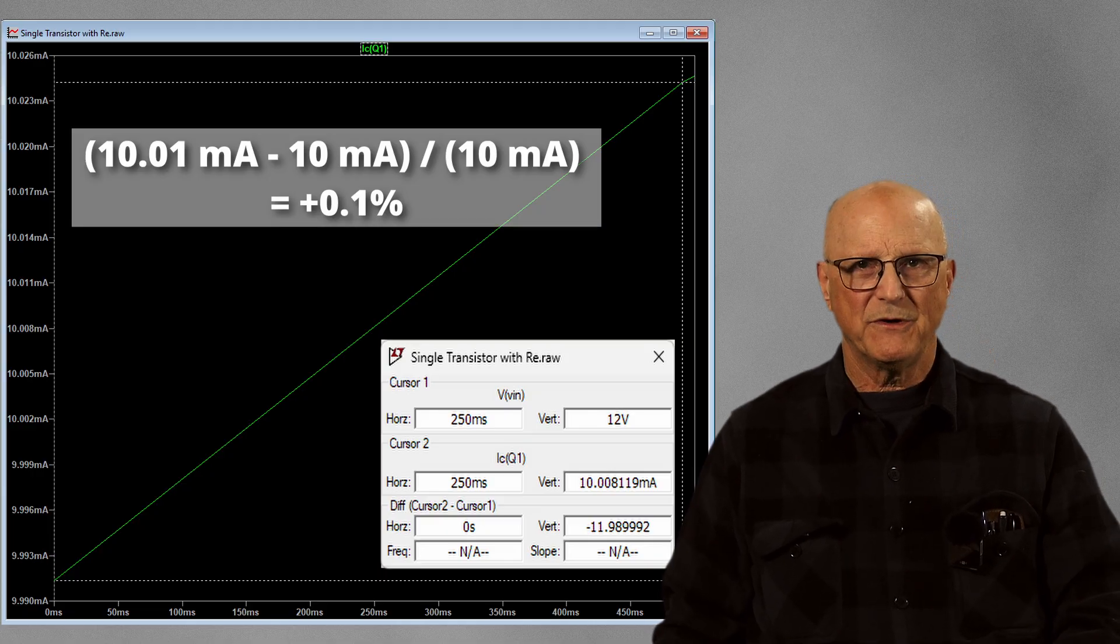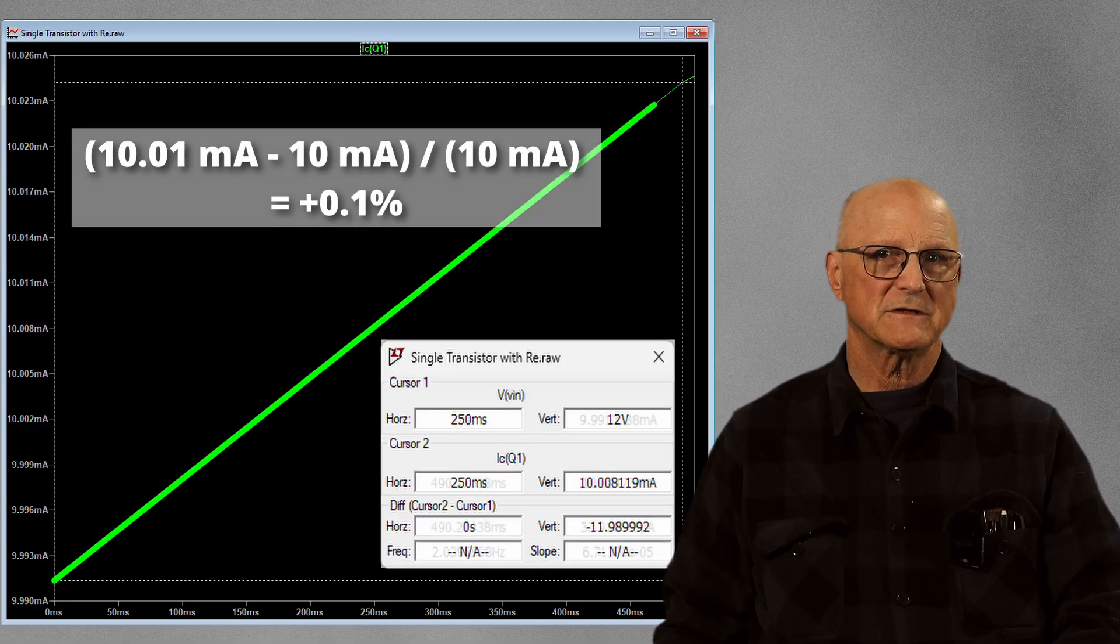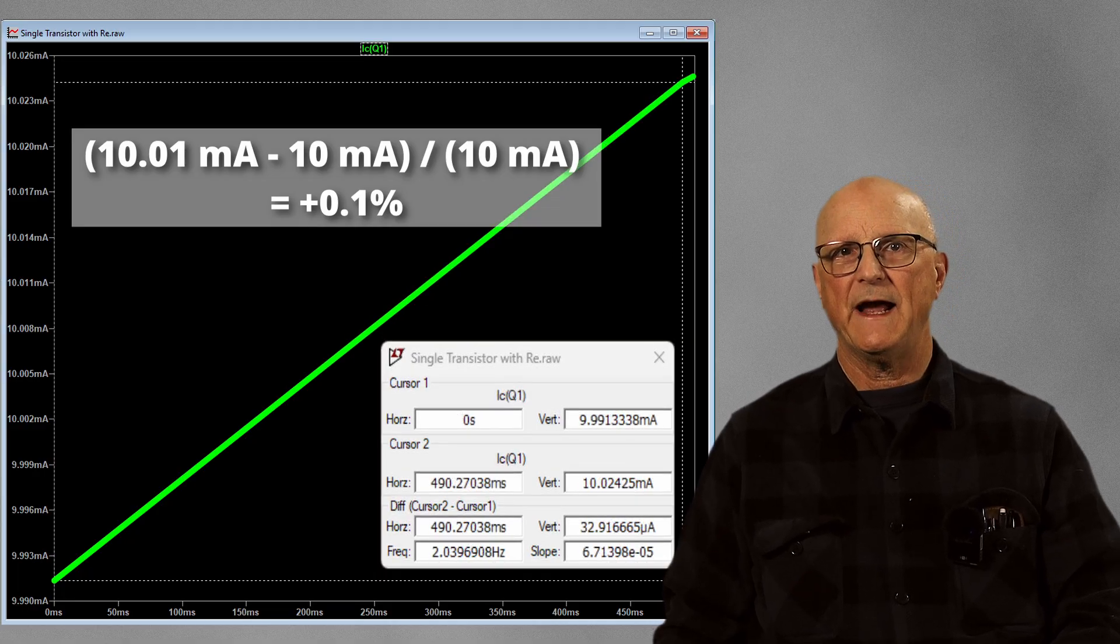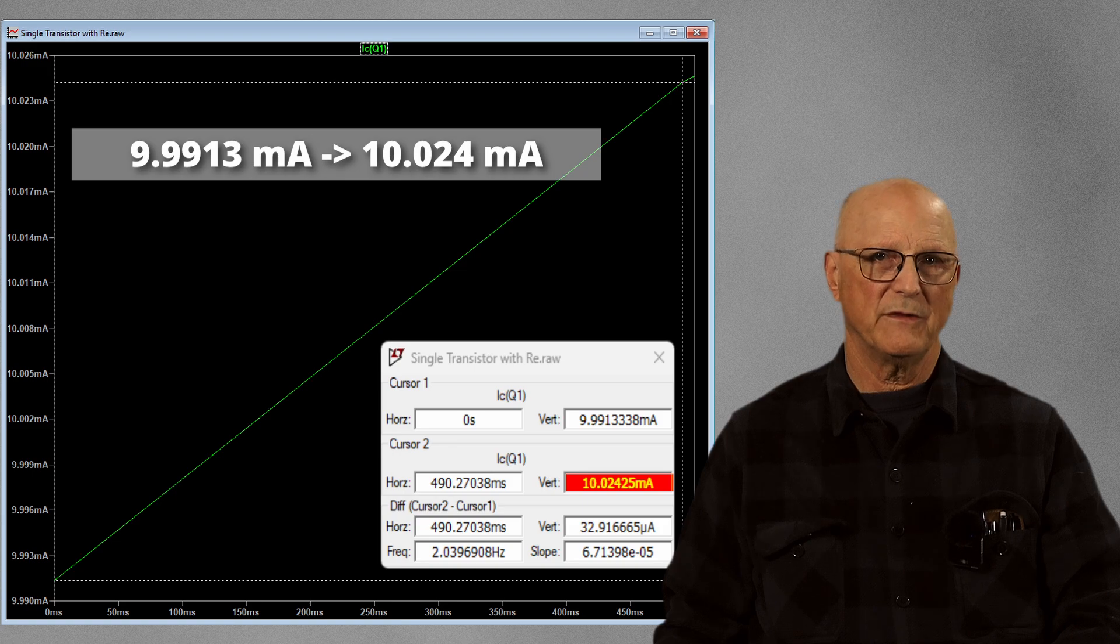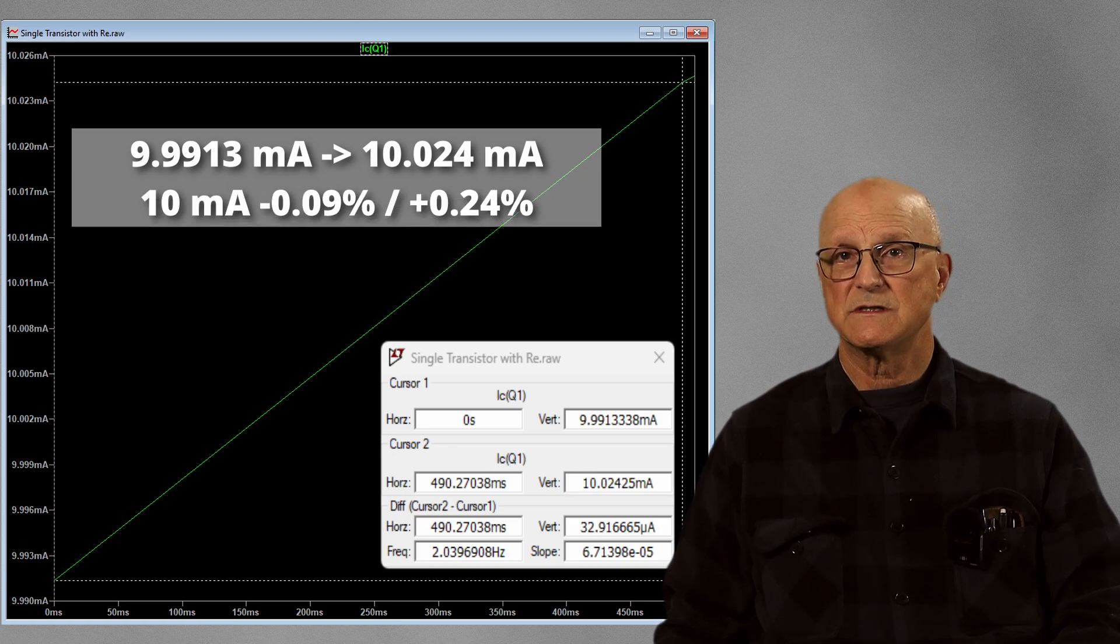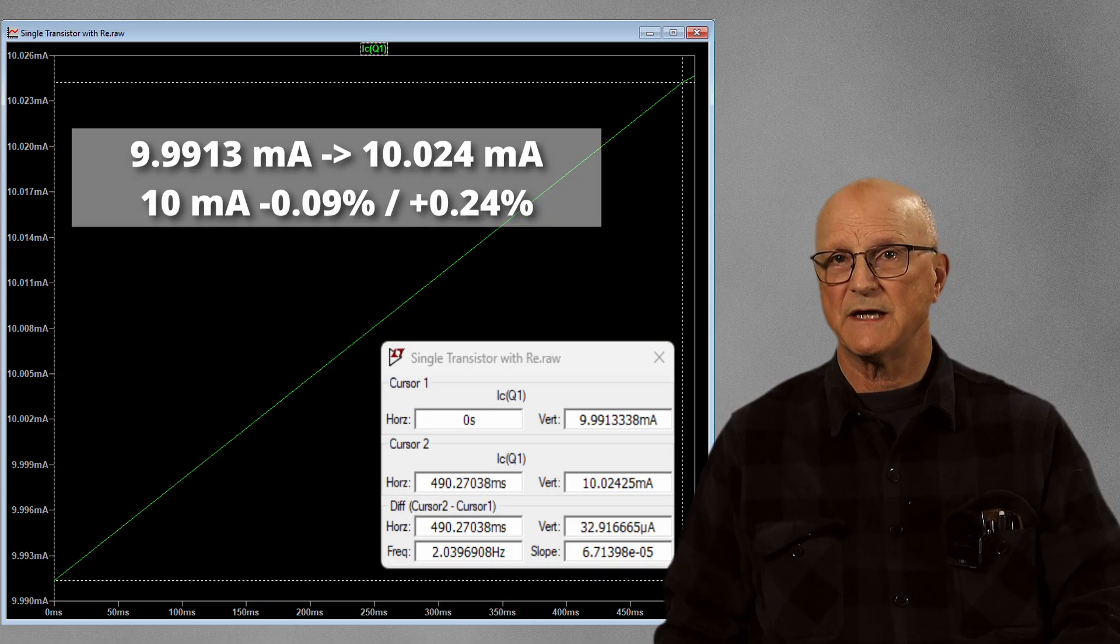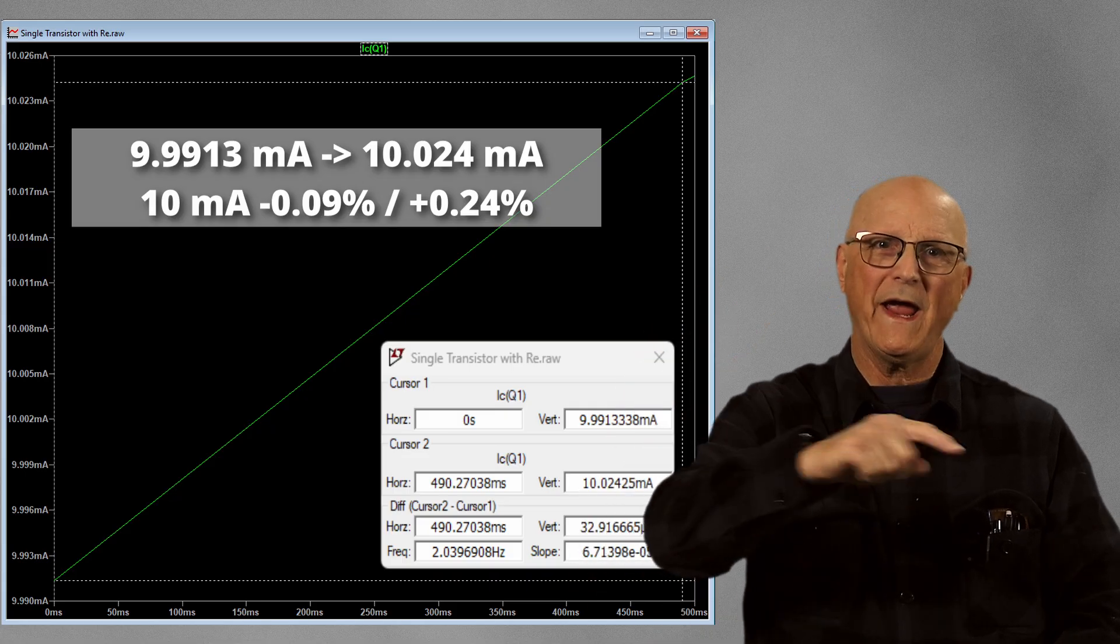When the input voltage varies from 9 volts to 15 volts, the collector current now varies from 9.9913 milliamps to 10.024 milliamps. This is 10 milliamps minus 0.09% plus 0.24%. That is way awesome.